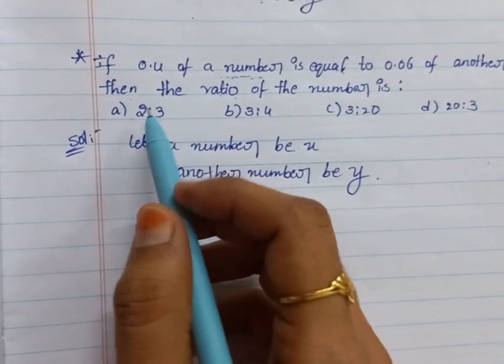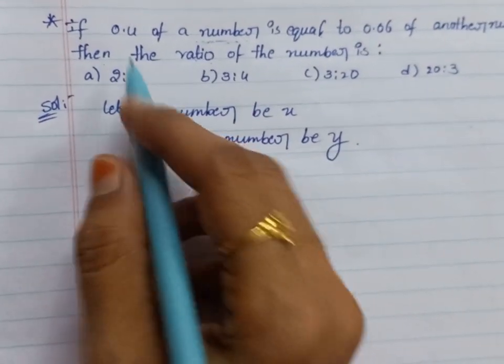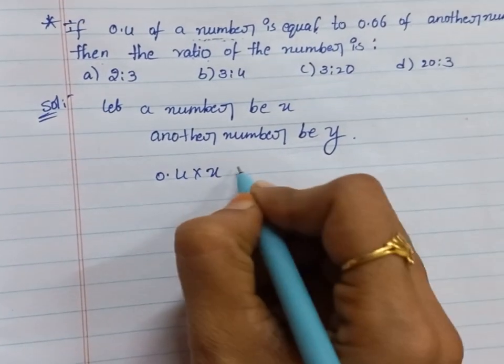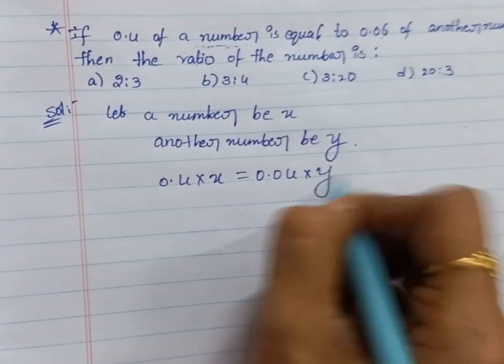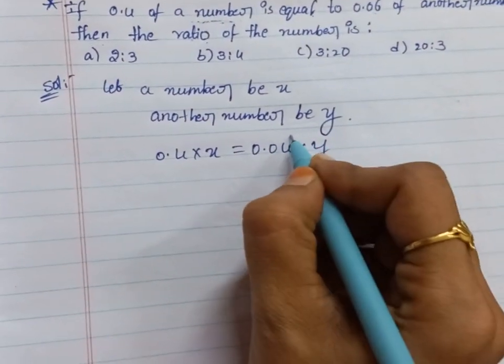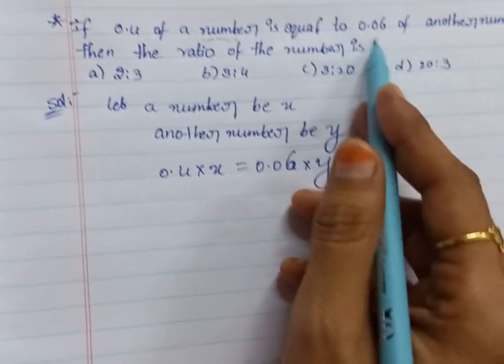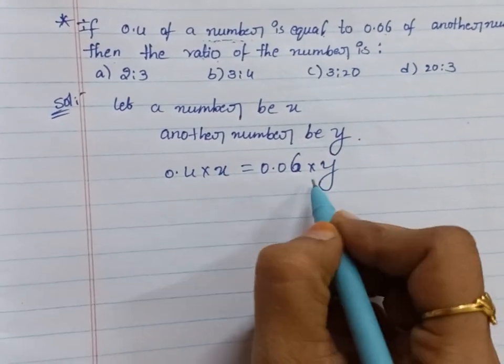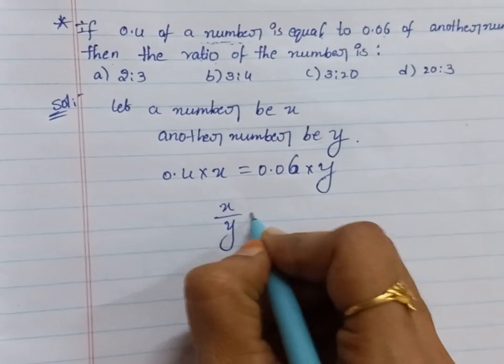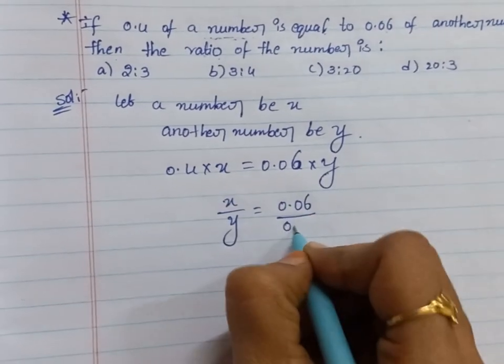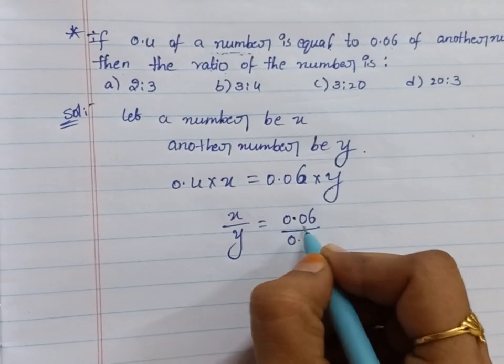0.4 times x equals 0.06 times y. Moving y to the other side by dividing, x over y equals 0.06 divided by 0.4.